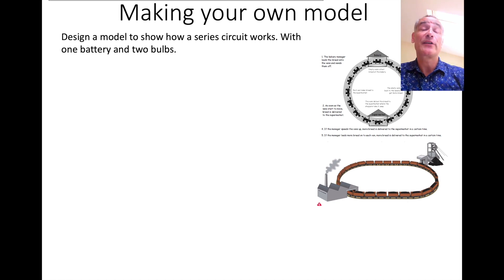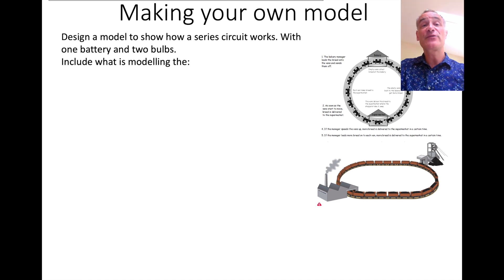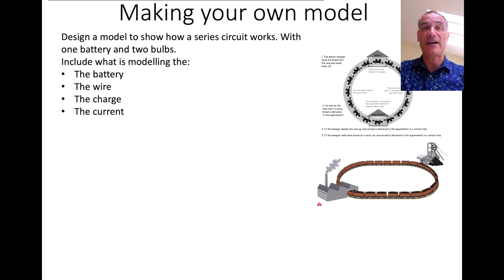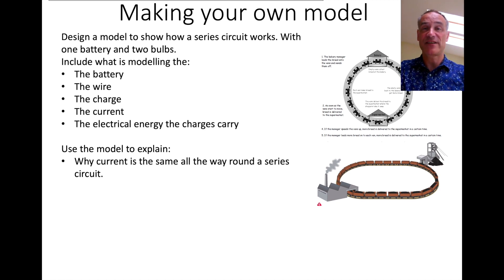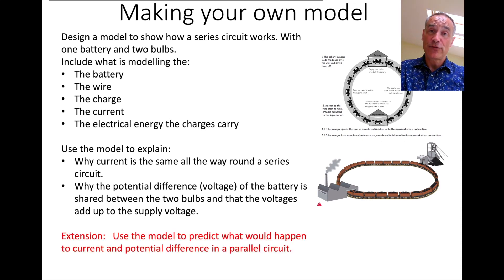Now I want you to either make your own model or use one of the models you've seen this morning to do the following. Design a model to show how a series circuit works with one battery and two bulbs. You need to include what's modelling the battery, the wire, the charge, and the current - remember, current is the flow of that charge, how fast the things are moving. What's modelling the electrical energy the charge is carrying, like our sweets or our boxes. Use this model to explain why current is the same all the way around a series circuit, and why the potential difference of the battery is shared between the two bulbs so the voltages add up to the supply voltage. For an extension, use your model to predict what happens in a parallel circuit.